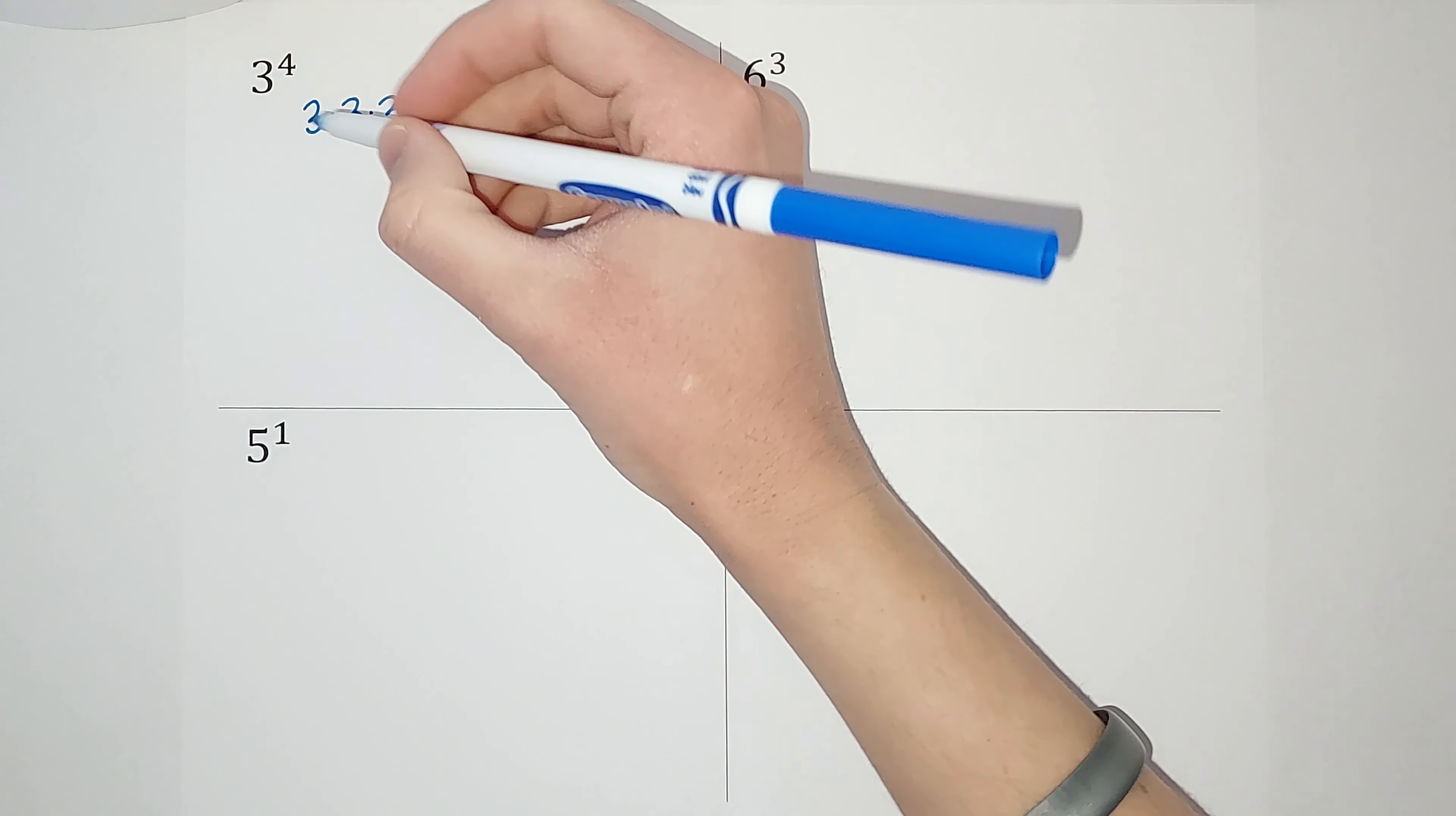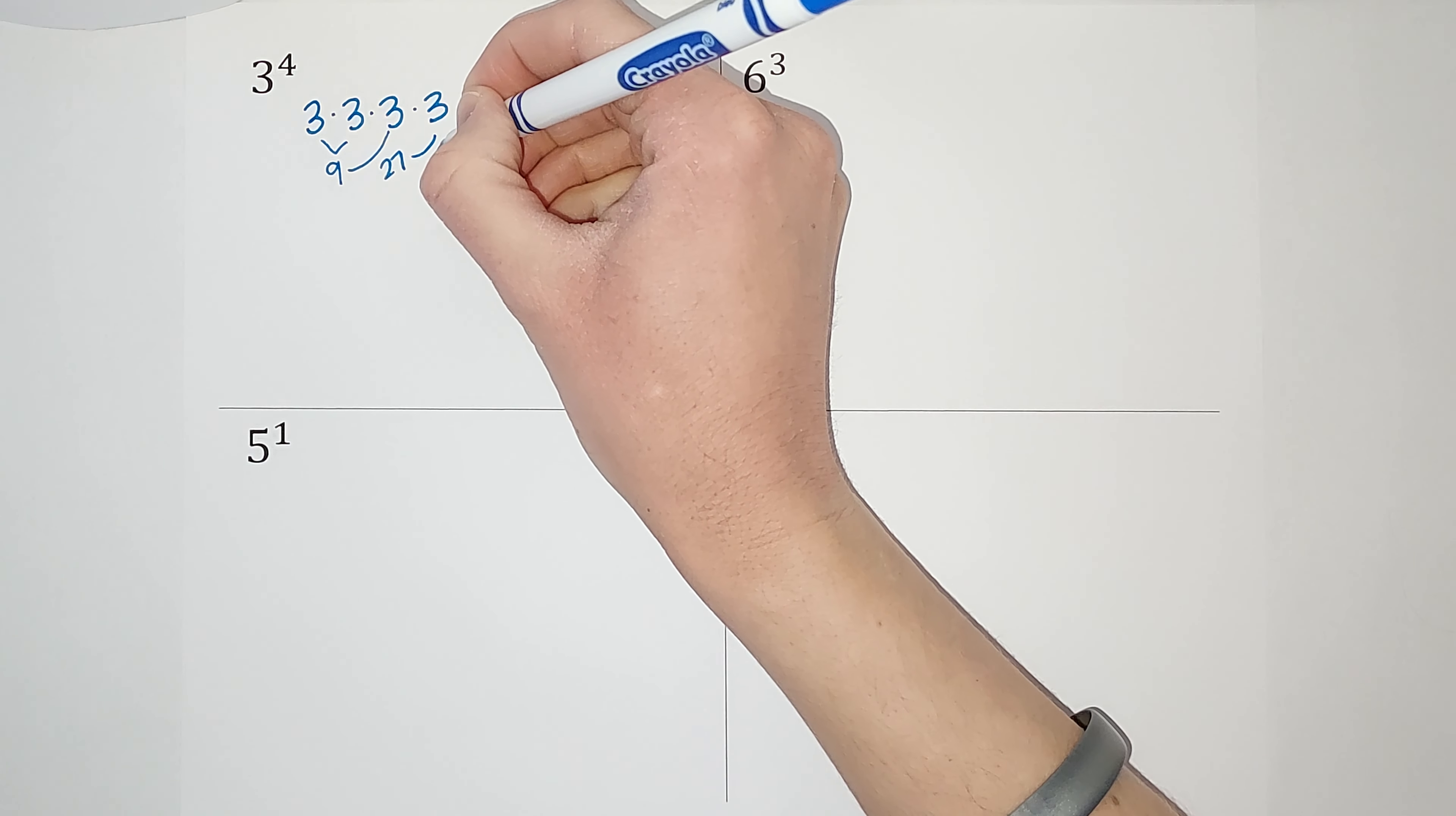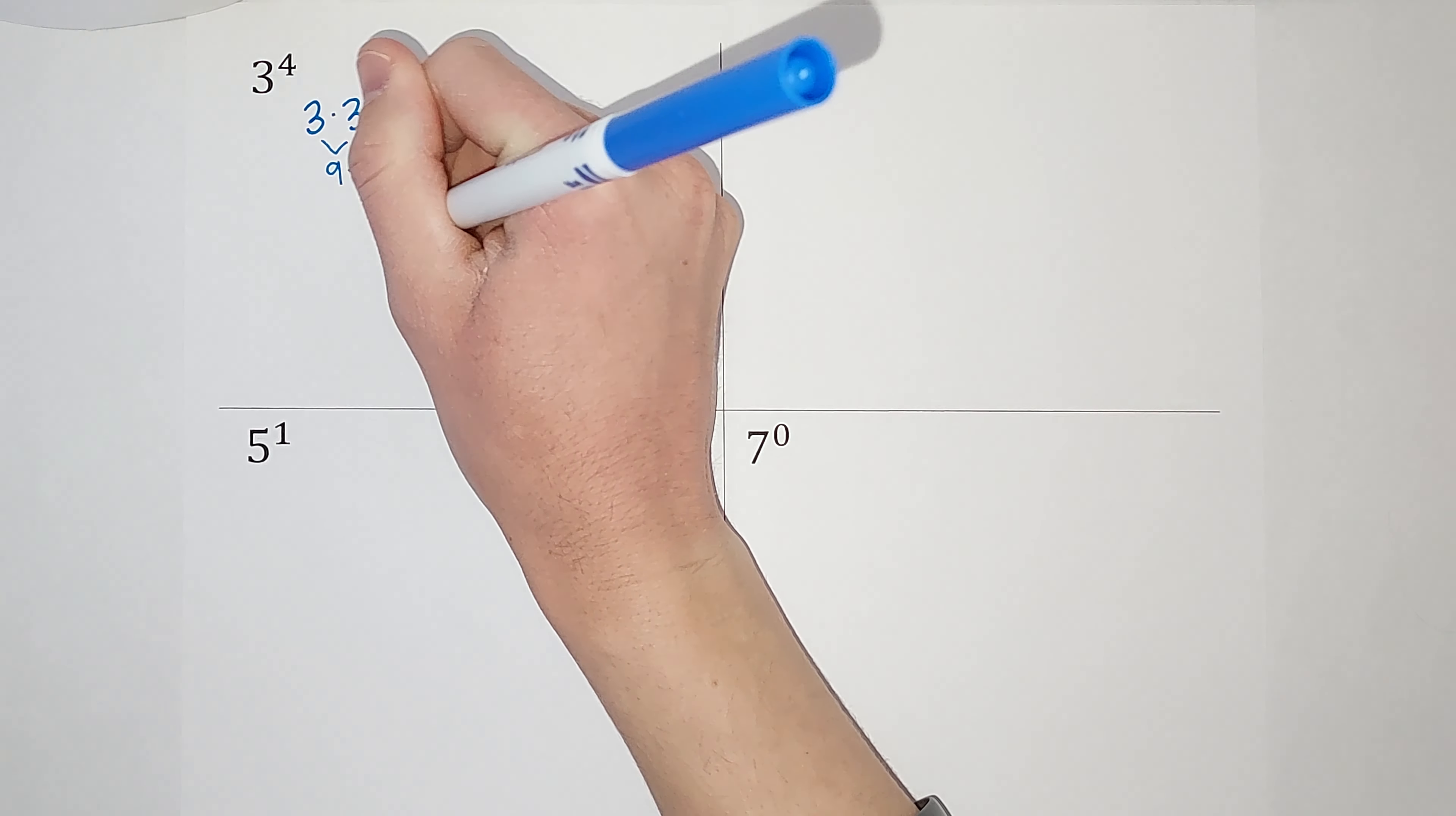Let's see what this looks like when we multiply these. So three times three is nine. Nine times three gives me 27. 27 times three gives me 81. That's my answer. Three to the fourth power is 81. Exponents get big fast.